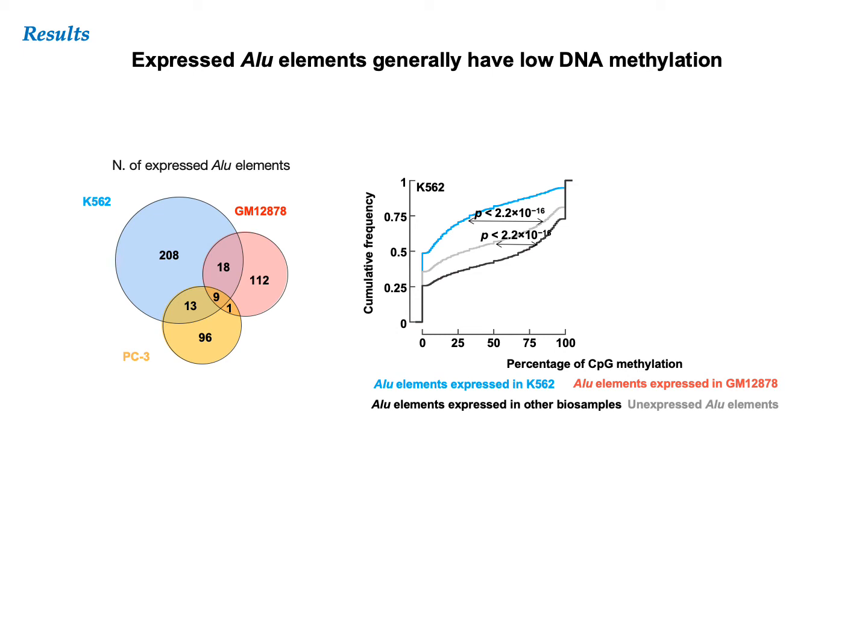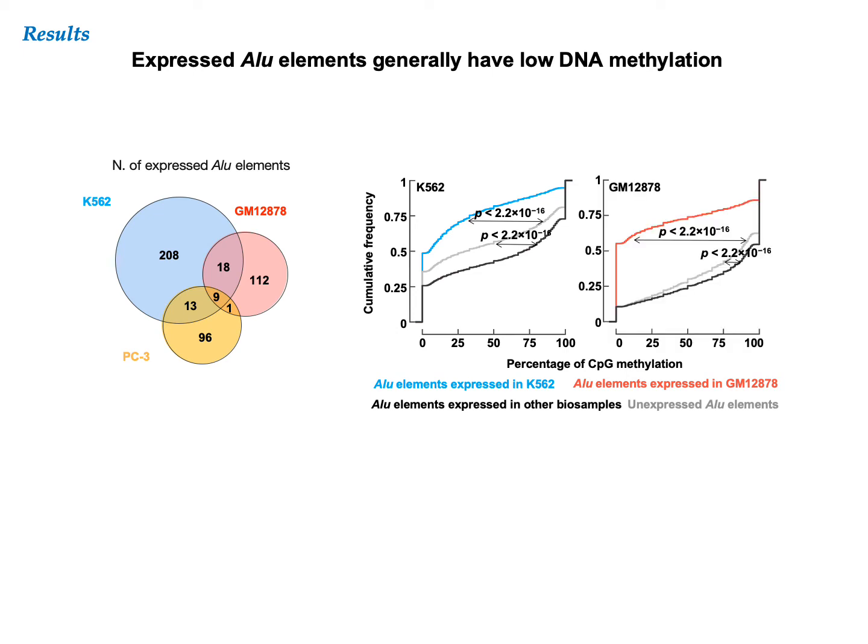We were surprised to see that the elements expressed in other samples had the highest DNA methylation in K562, and our results indicate that these elements are repressed in K562 by DNA methylation. We observed exactly the same trend with the whole genome bisulfite sequencing data in GM12878. The Alu elements specifically expressed in GM, illustrated by the red line, had significantly lower DNA methylation than the elements not expressed in any sample, and the elements expressed in other samples.